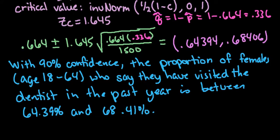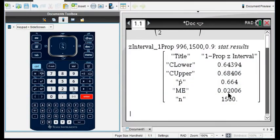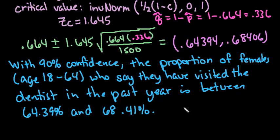Another way that sometimes they'll report it is as the point estimate, which is our p-hat, plus or minus our margin of error, which was given to us in the problem. So we could also say that the proportion who have visited is 66.4% with a margin of error of plus or minus 2%. That kind of just gives you an in-between value that you can use.